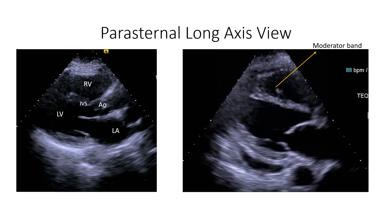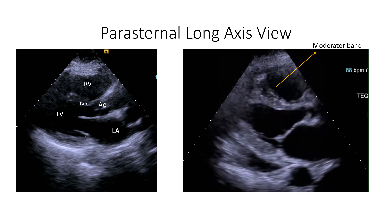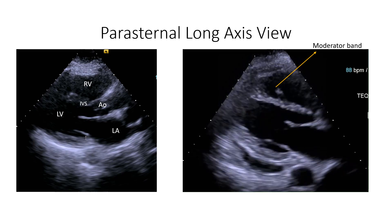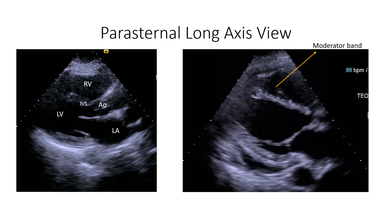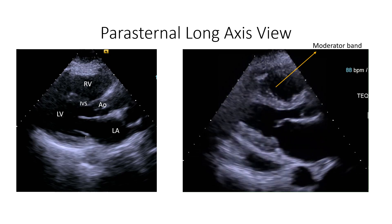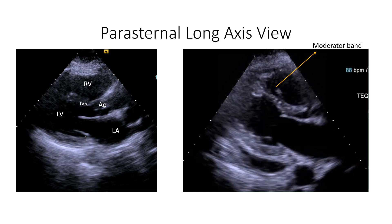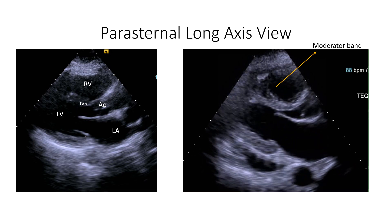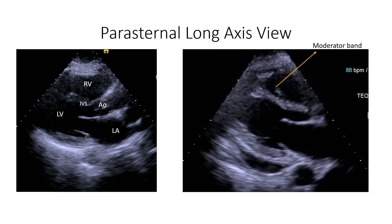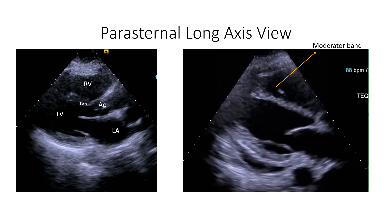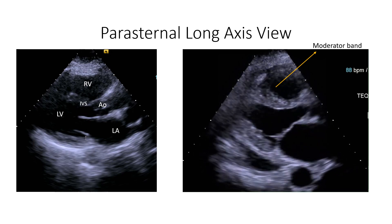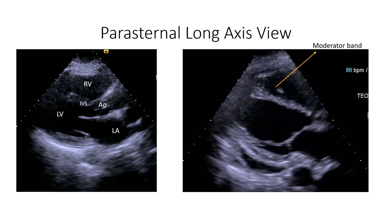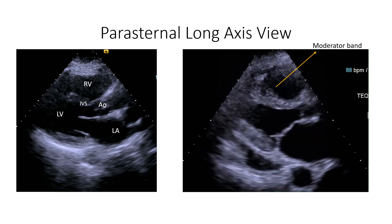This shows the parasternal long axis view. You can see the right ventricle, left ventricle, left atrium, the aorta, as well as the intraventricular septum. In this view, we can measure the right ventricular hypertrophy that occurs with chronic pressure loading. We can also view any intraventricular septal deviation or thickening. The moderator band is also seen on this echocardiographic view.